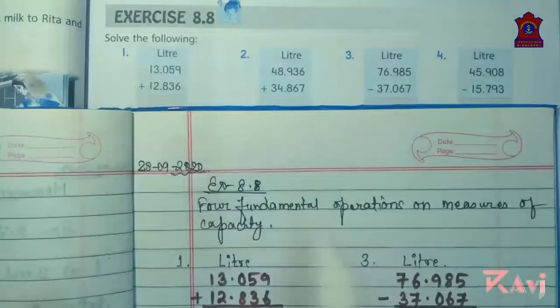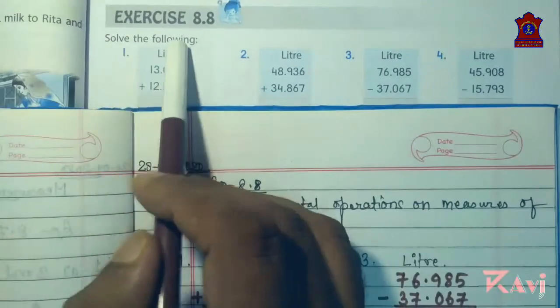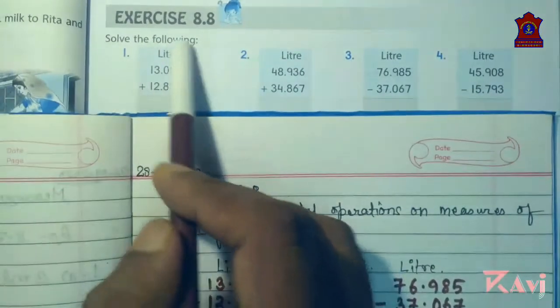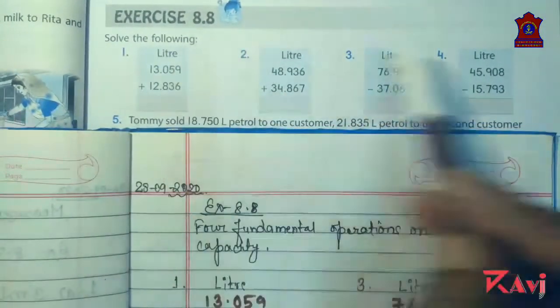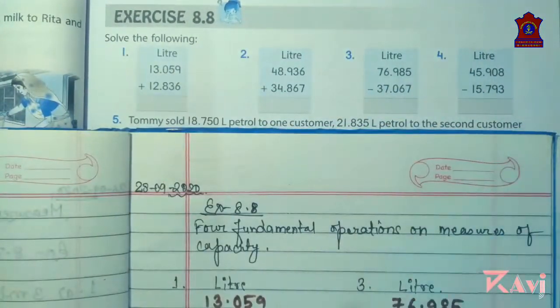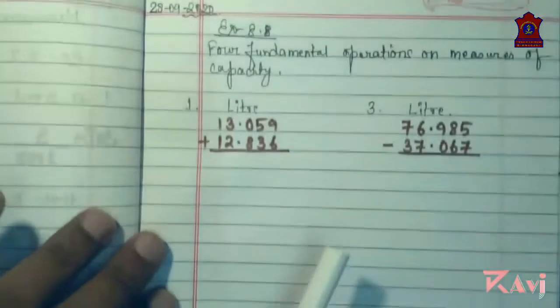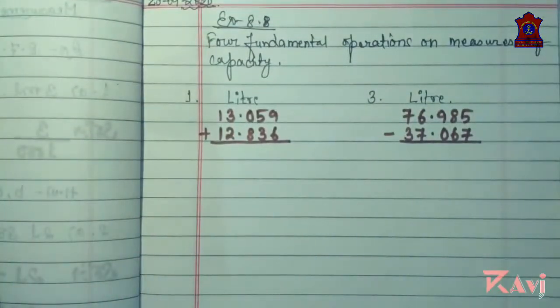The first question says 'solve the following.' Questions 1 to 4 you have to do in your book only.